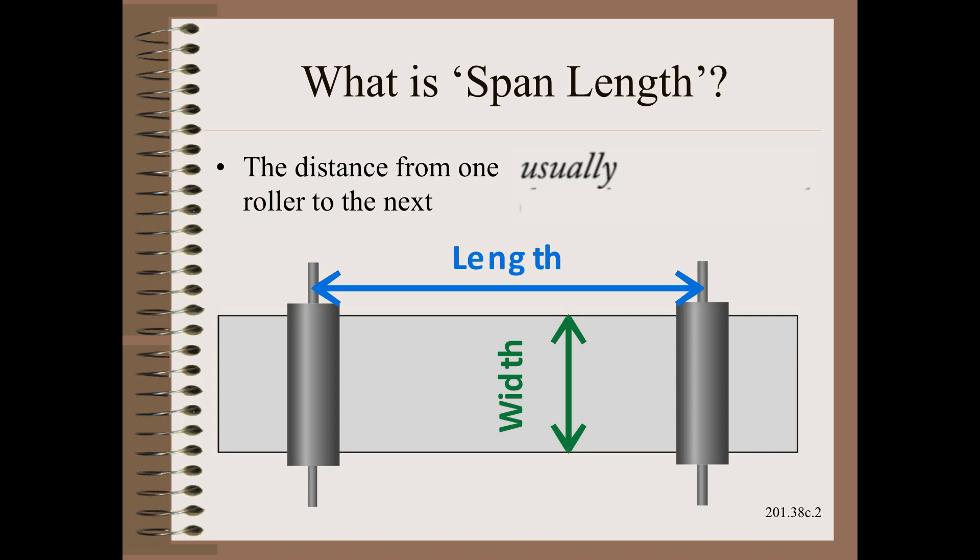However, it is not the distance between rollers that matters so much as the L over W, which is the span length divided by web width.